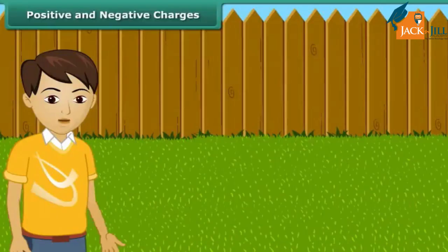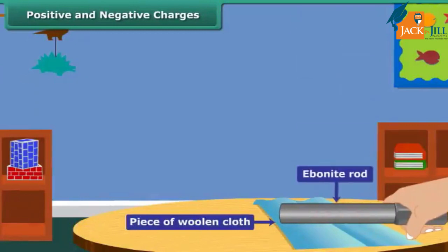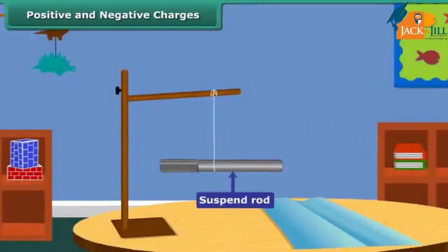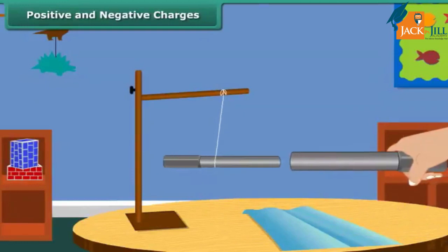Let us perform an activity to understand positive and negative charges. Take an ebonite rod and rub it with a piece of woollen cloth. Now suspend the rod by tying a thread through its middle. Now charge another ebonite rod in the same way and bring it close to the suspended rod. What do you notice? The suspended rod moves away from the second one.